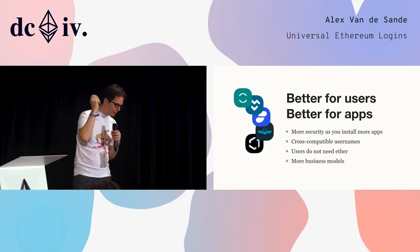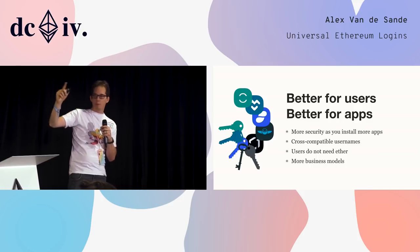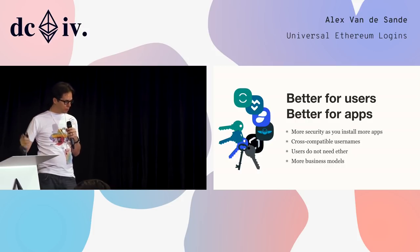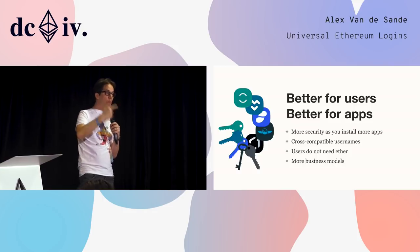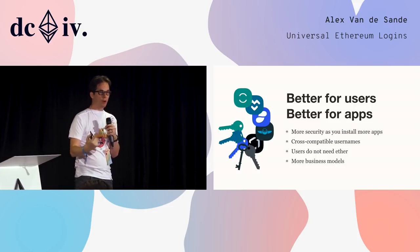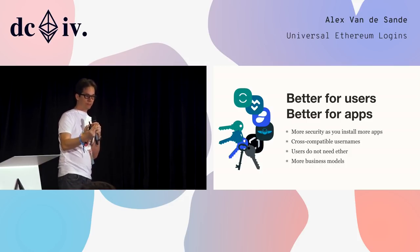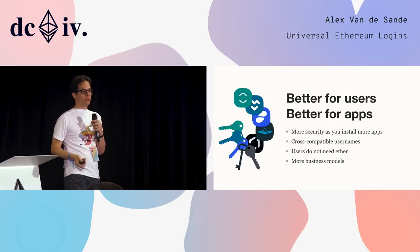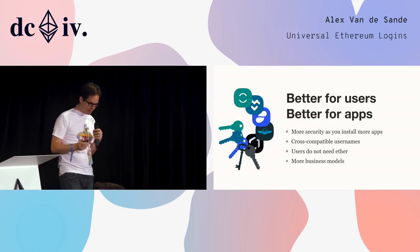This is better for users and for apps, because every time you install a new app, you have more security and cross-compatible usernames. Users don't need Ether, which means you can have more open business models — for instance, a subscription model where the user goes in and you pay their transactions for free, then charge them five dollars per month via a credit card.